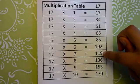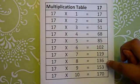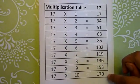17 sixes are 102, 17 sevens are 119, 17 eights are 136, 17 nines are 153, 17 tens are 170.